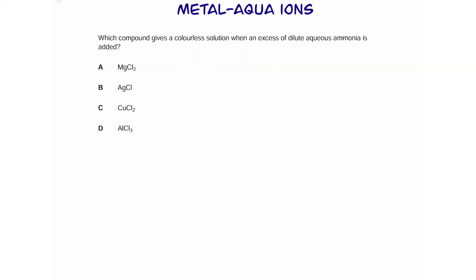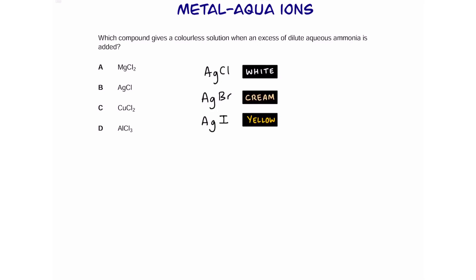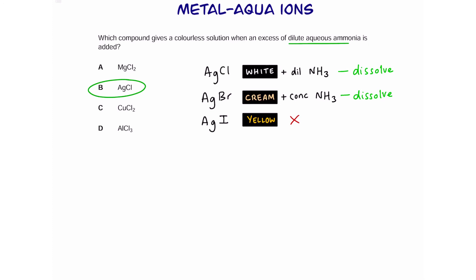What compound gives a colourless solution when excess dilute aqueous ammonia is added? This is interesting — remember from first-year AS that silver chloride, silver bromide, and silver iodide form white, cream, and yellow precipitates. Adding dilute ammonia to silver chloride dissolves it; concentrated ammonia dissolves silver bromide; silver iodide never dissolves. Since the question specifies dilute ammonia, silver chloride dissolves to give a colourless solution. The trick here is combining hexa-aqua ion knowledge with recall from previous topics.